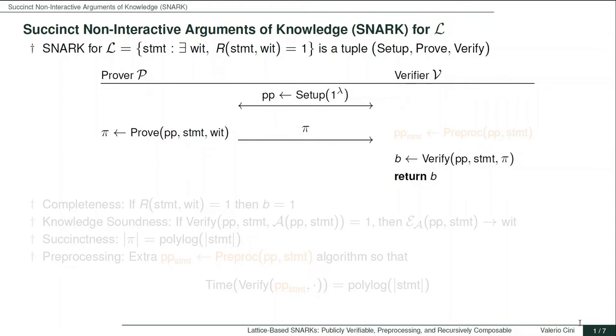The properties that we require from such a proof system are completeness, that is, whenever the statement witness tuple used by the prover satisfies the relation R defining the NP language L, the verifier should accept. Knowledge soundness, that is, whenever an adversary makes the verifier accept, it should be possible to extract from such an adversary the witness corresponding to the statement being proven.